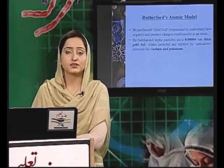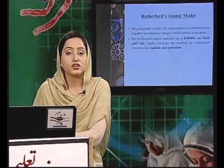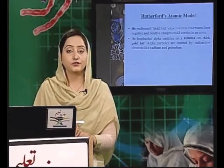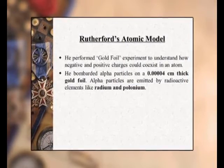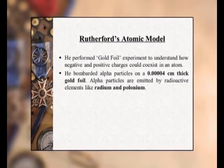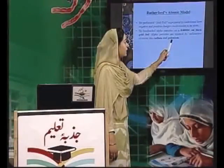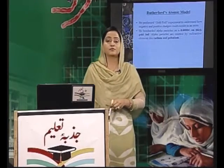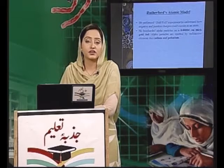तो students अब हम बात करते हैं Rutherford की atomic model की। Rutherford نے اپنا model پیش کیا جس میں proton اور electron کے ساتھ انہوں نے کہا کہ ہم یہ دیکھنا چاہتے ہیں کہ atom کے اندر یہ particles آخر کس طریقے سے arrange ہیں۔ اس کے لیے Rutherford نے experiments شروع کیے۔ وہ experiment جس کی بنیاد پر انہوں نے اپنا atomic model پیش کیا، اس میں انہوں نے 0.004 cm thick gold foil لی اور اس پر alpha particles کو radiate کروایا جو radium اور polonium سے لیے گئے تھے۔ اس experiment کو gold foil experiment بھی کہتے ہیں۔